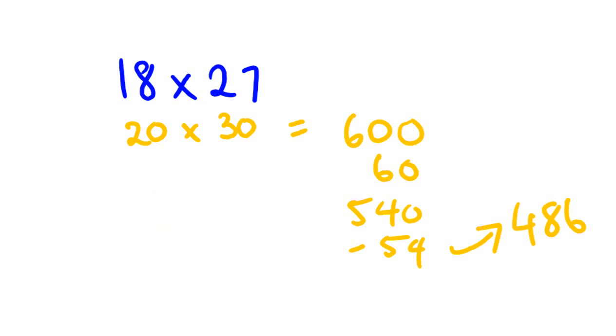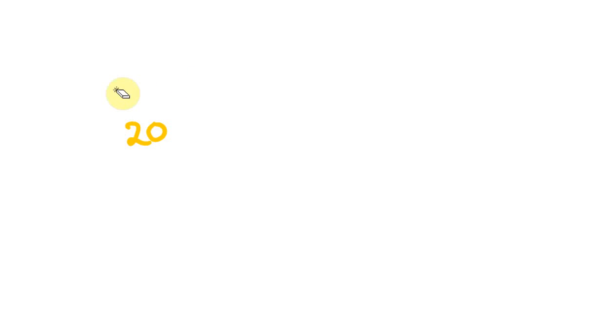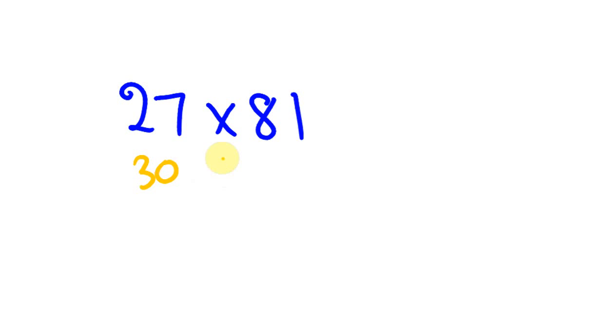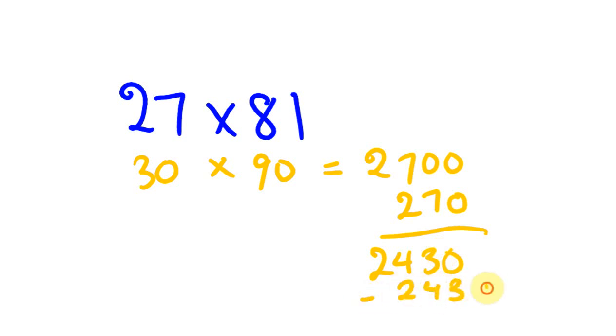What about one last one of those? What about I give you 27 times 81? Let's round both of them up. Let's get really, really adventurous here. Round both up to 30 times 90. And we're going to get this answer, 3 times 9 is 27, 2,700. Take off 10%, which is 270. That's going to give us the answer of 2,430. And take off 10%, which is 243. And that is going to give you the wonderful, wonderful, wonderful answer of 2,187.